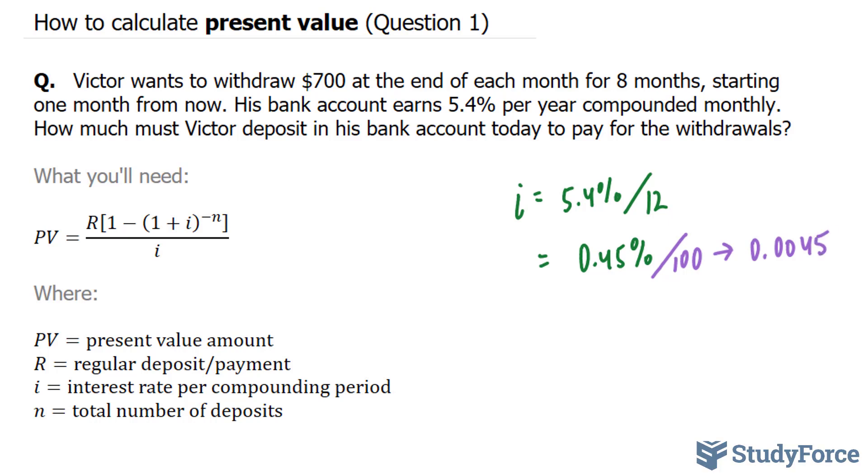We also know our regular deposit or payment. The question says that Victor wants to withdraw $700 at the end of each month. So our R value is $700. Furthermore, we are told that he will do this for the next eight months. So therefore, our n, which is our duration, or total number of deposits in this case, is equal to 8.